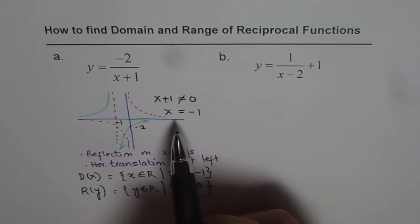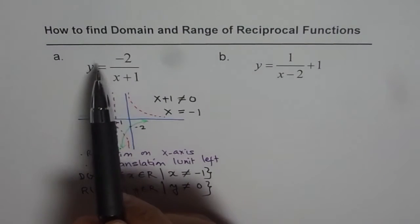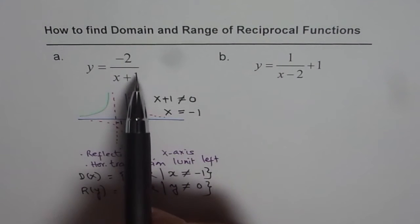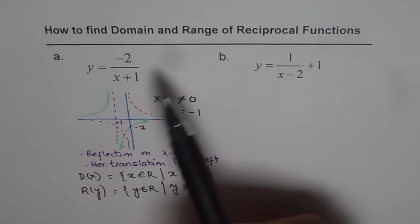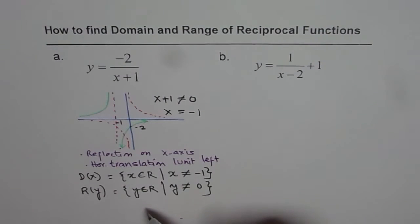The other way to look into it is that as far as the transformations go, there is no vertical translation of up and down. Since there is no vertical translation, the range remains the same as that of the original parent function 1 over x.